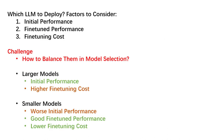With all these factors, the challenge is how to effectively balance them in selecting the best model for our downstream task. For example, larger models may have better initial performance, but their fine-tuning cost is relatively higher. Smaller models may have worse initial performance, but they may achieve very good fine-tuned performance with lower fine-tuning cost compared with larger models.